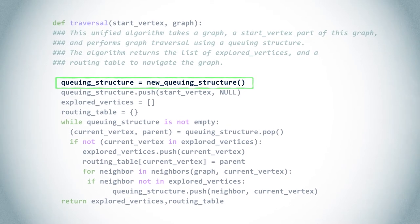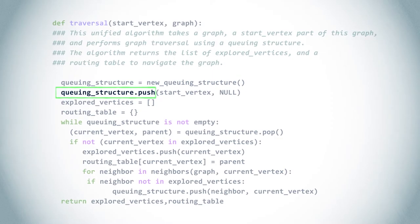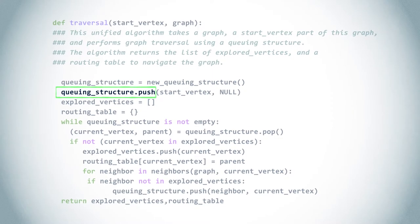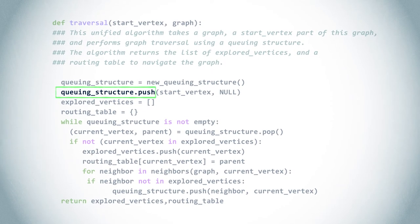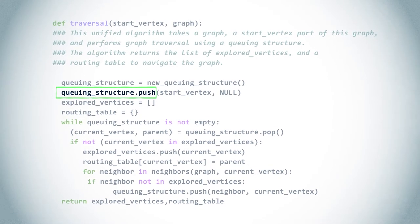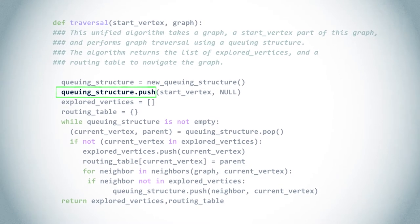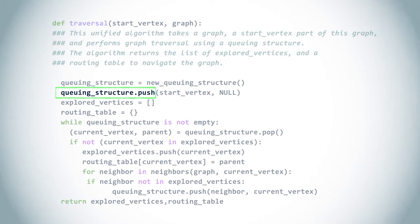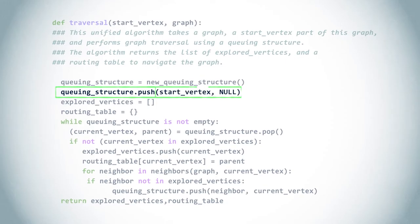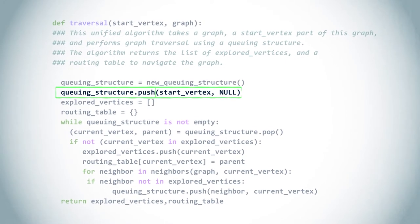Once we have chosen a queuing structure, we first push the starting vertex. We are interested in building the routing table as well, so in the queuing structure we push couples made of the vertex and its parent in the corresponding spanning tree. Since the starting vertex has no parent, we use null instead.